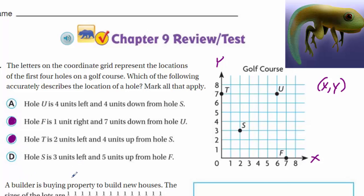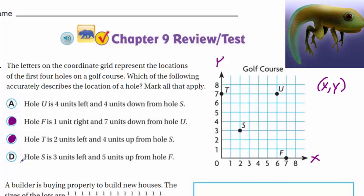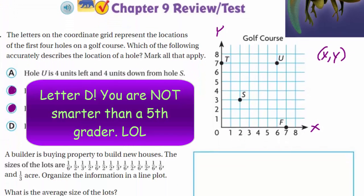Answer D says hole S is three units left and five units up from hole F. Well, S is definitely to the left of hole F. Is it three? One, two, three — no, it's not. And it's not even five units up either. So sorry, D, you do not get to participate. We shall move on to the next problem.